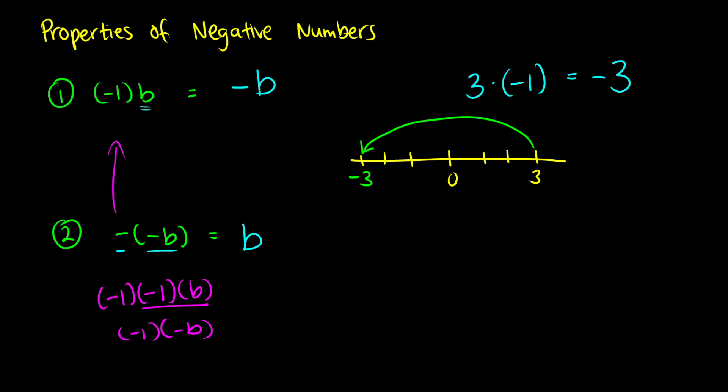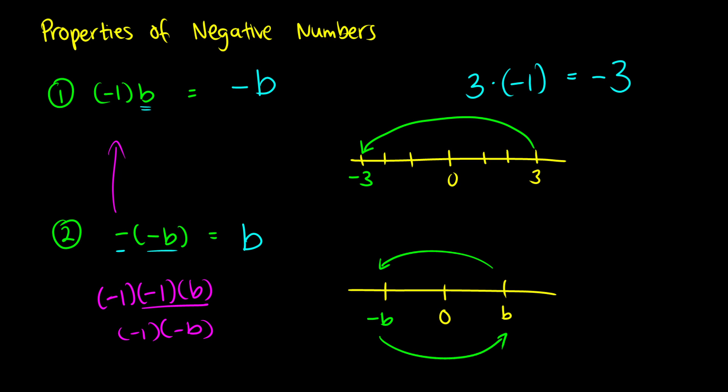If we multiply negative b by negative 1 again, let's draw this out. Let's say this is zero and this is some number b. When we multiply by negative 1, we get negative b — we flip it around zero. When we do this again, we just flip it back to b. So negative 1 times negative b gives us b back. We've done a double negative which cancels out — negative 1 times negative 1 is just positive 1.